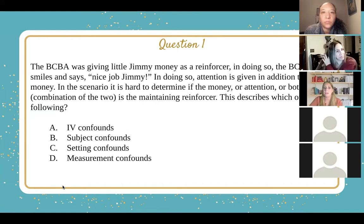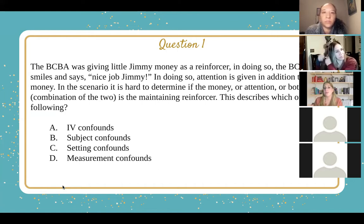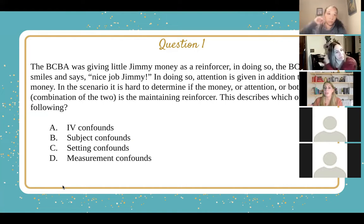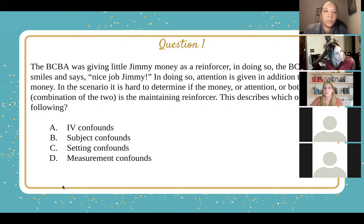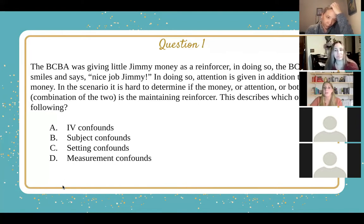Your setting compounds — you want to think of problems that occur with the setting. So bootleg reinforcement would be one, when someone is able to access reinforcement prior to reaching that contingency. And lastly, we have measurement compounds, where you want to think of observer drift, observer bias, or reactivity.